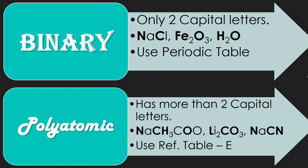There will also be times where we have to differentiate between binary and polyatomic compounds. Binary — like binary code — involves two different elements. If you see a compound with two capital letters, like NaCl, Fe2O3, or H2O, those are binary compounds and you'll use the periodic table to identify them. A polyatomic ion has more than two capital letters — for example, NaCH3COO is sodium acetate, Li2CO3 is lithium carbonate, and NaCN is sodium cyanide. For those, you'll be using reference table E, which we'll cover later in the year.